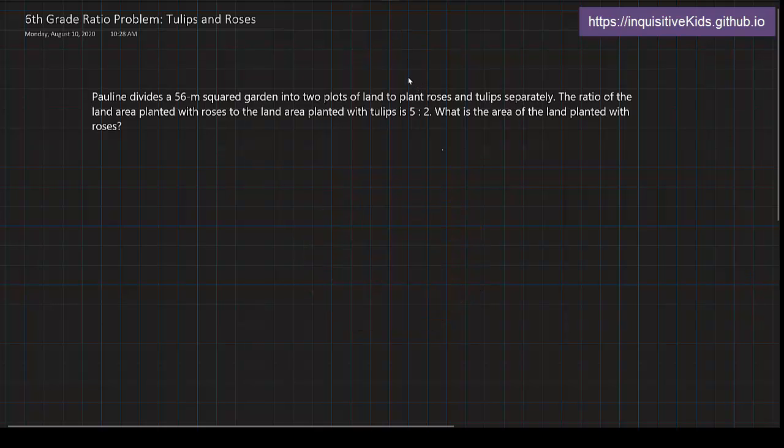So let's first reread the problem. The total area of the garden is 56 meters squared, and the ratio of the land with roses to the land with tulips is 5 to 2. We're asking, what is the area of the land planted with roses? So first let's write this down: 5 to 2 is the ratio.